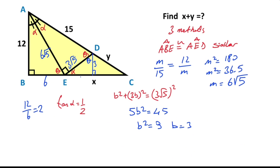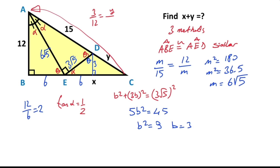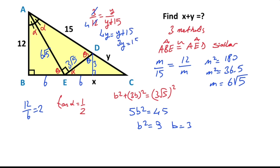And here is 6. If you notice that this triangle and this triangle are similar, that means the ratio of 3 over 12 must equal y over (y plus 15). If you simplify, 4y must equal y plus 15, so 3y equals 15 and y is going to be 5 units.